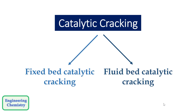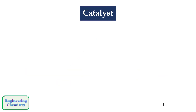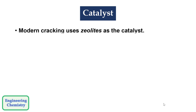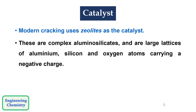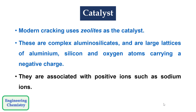Catalytic cracking is also of two types: fixed bed catalytic cracking and fluid bed catalytic cracking. Modern cracking uses zeolites as the catalyst. These are complex aluminosilicates and are large lattices of aluminum, silicon, and oxygen atoms carrying a negative charge, associated with positive ions such as sodium ions. Sometimes alumina is also used as a catalyst.